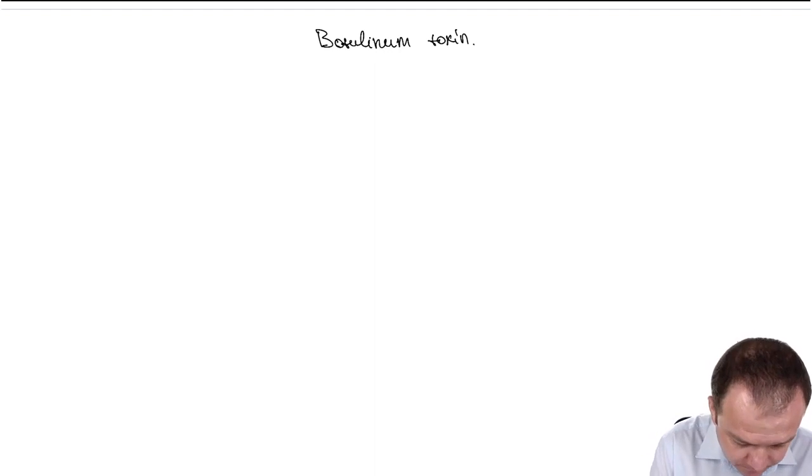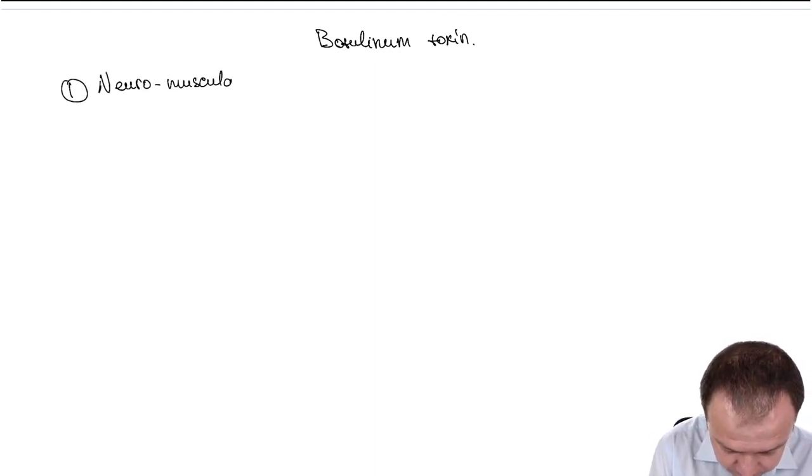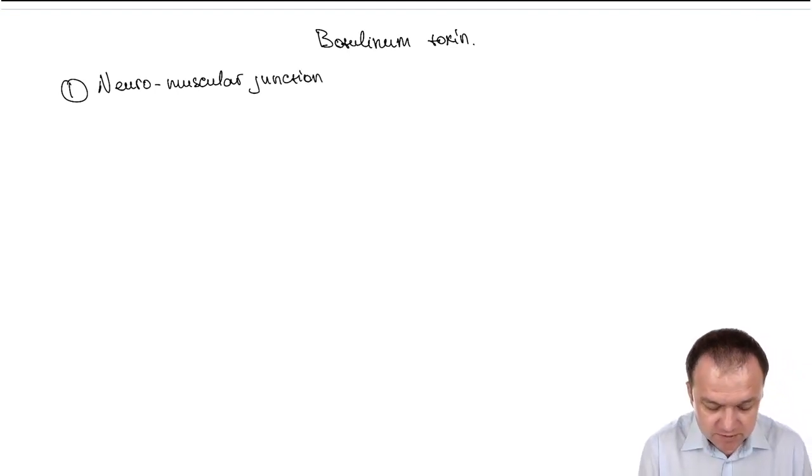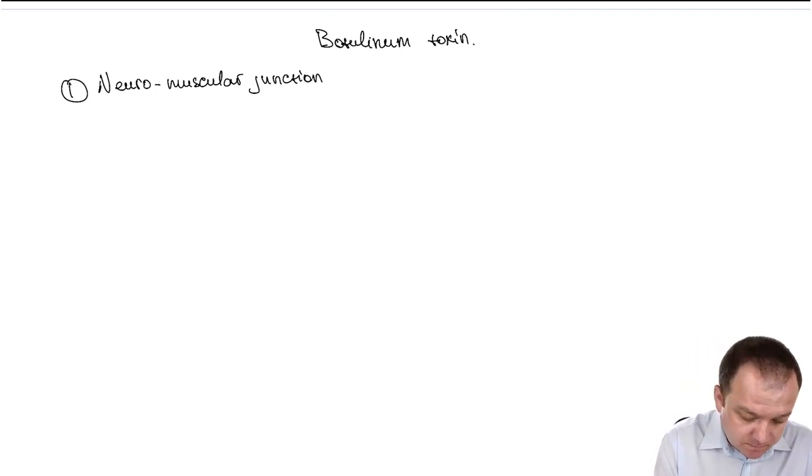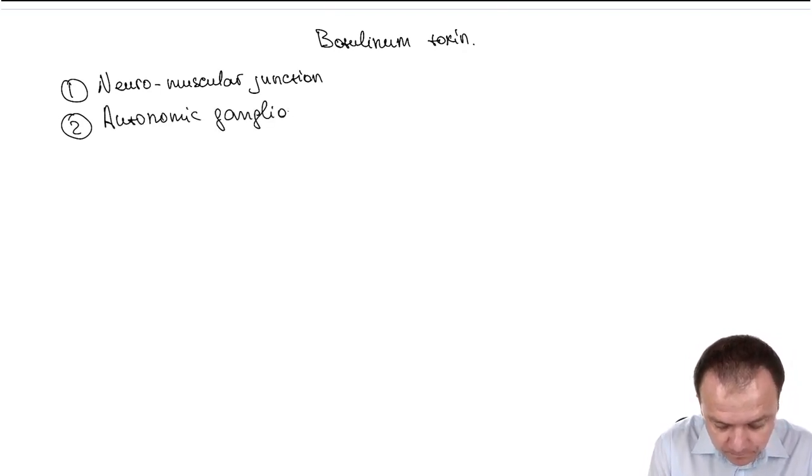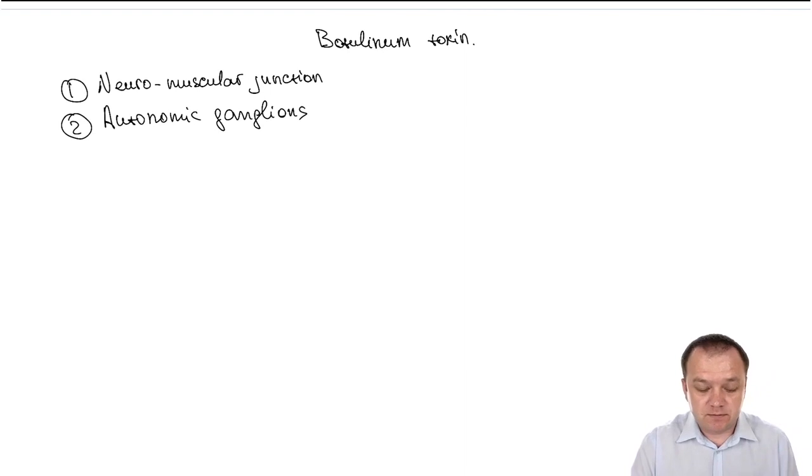First, botulinum toxin will act at the neuromuscular junction because we have cholinergic transmission there. Second, botulinum toxin will act on autonomic ganglions in both sympathetic and parasympathetic nervous systems.